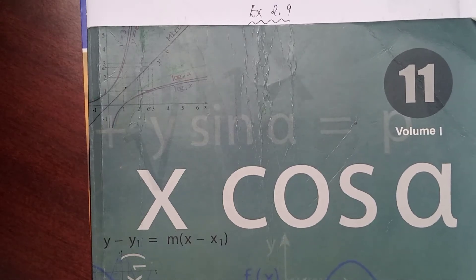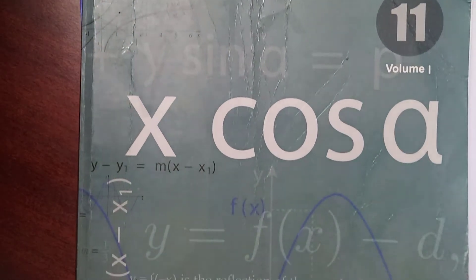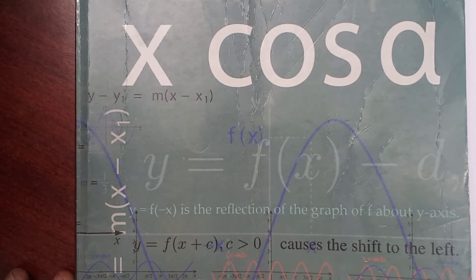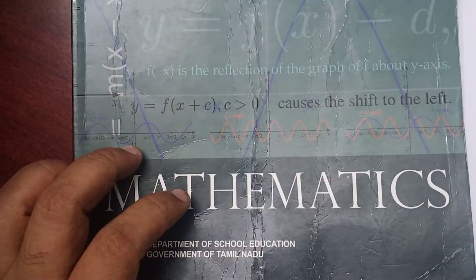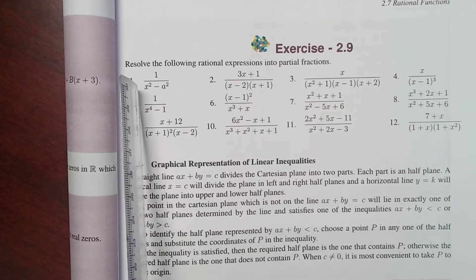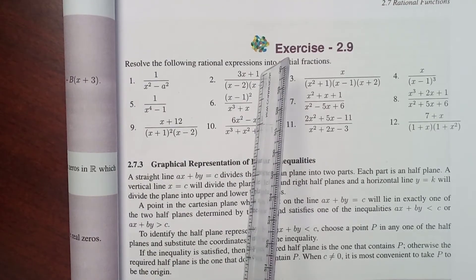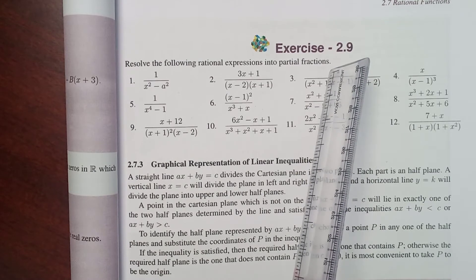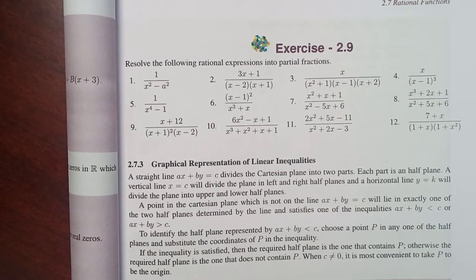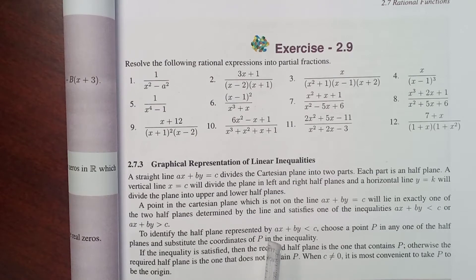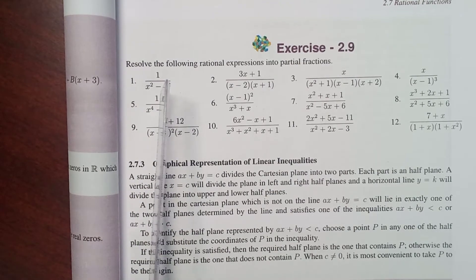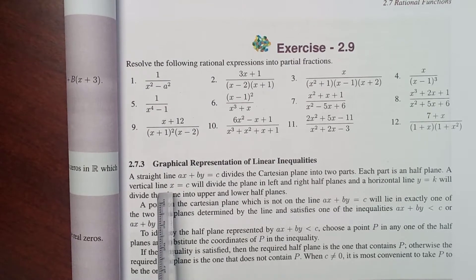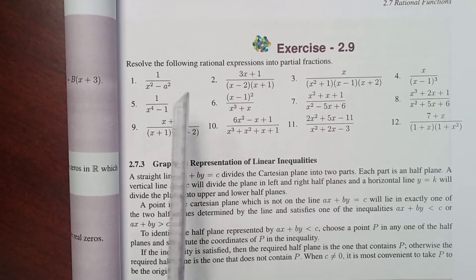Hi students, this is Subhokumar. 11th standard mathematics, chapter number 2, exercise 2.9 — resolve the following rational expressions into partial fractions, a very important exercise. We can do the first problem here; we have different types. I start with the first type.